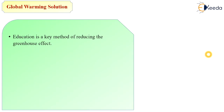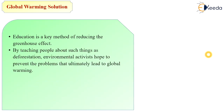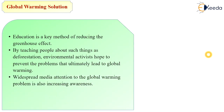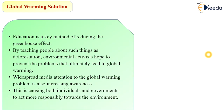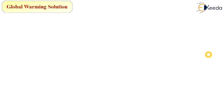Education is a key method of reducing the greenhouse effect. Nowadays, awareness is being created among students, school children, and college students about reducing the effects of global warming. By teaching people about deforestation and other environmental issues, activists hope to prevent problems that lead to global warming. Widespread media attention to global warming is also increasing awareness and causing both individuals and governments to act more responsibly towards the environment, with many NGOs actively participating.